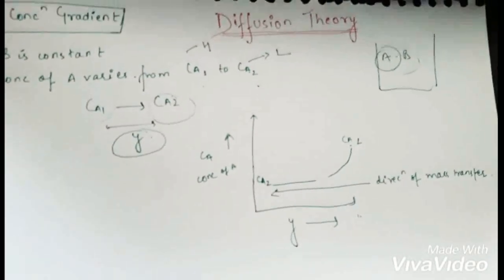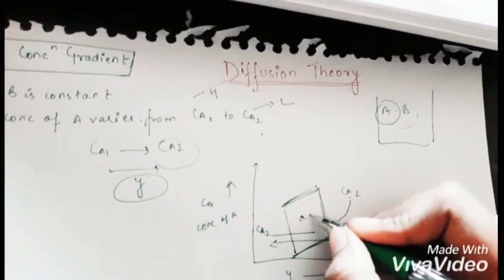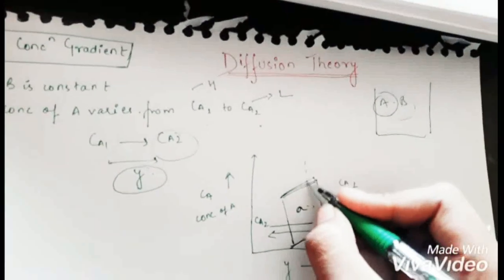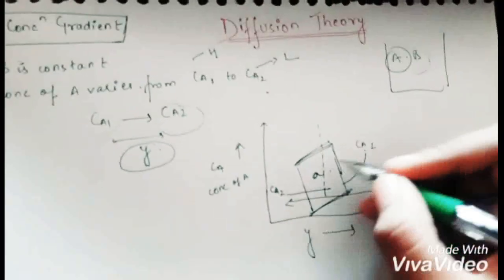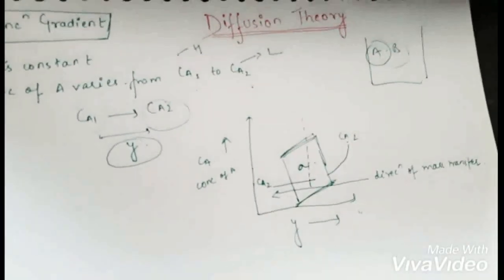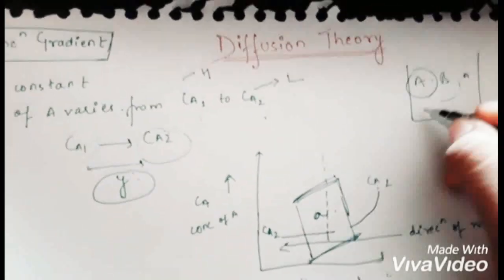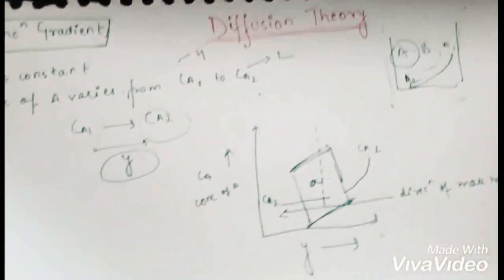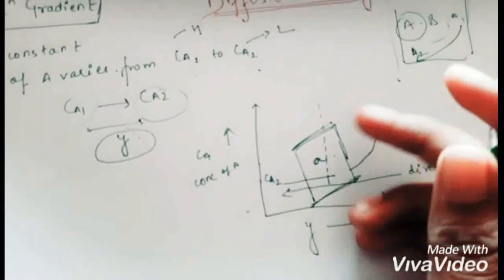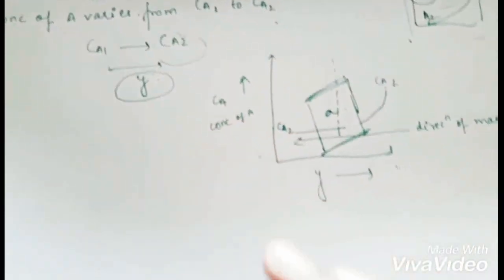To calculate how much mass is transferred in diffusion theory, we assume that the mass transfer of A occurs across an area A, which is perpendicular to the direction of mass transfer. Area A represents the cross-sectional area of the vessel or beaker. Through this perpendicular area we can calculate the rate of mass transfer.